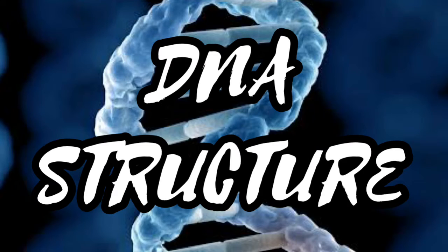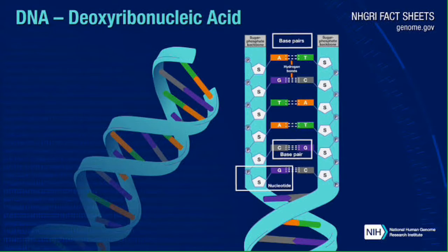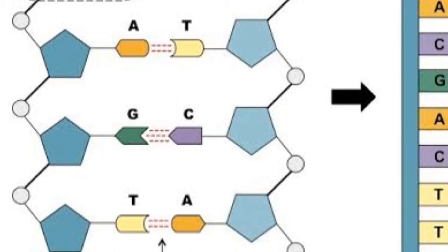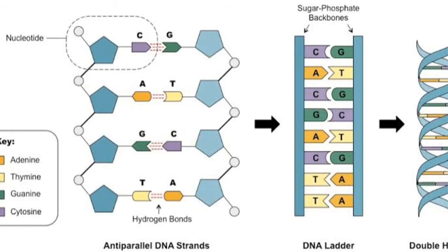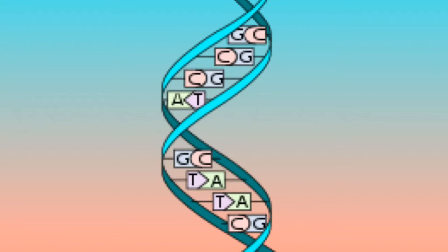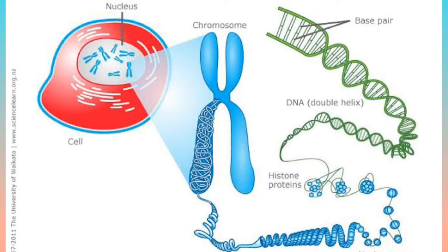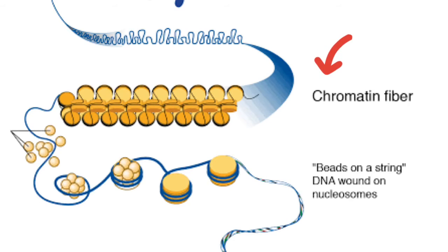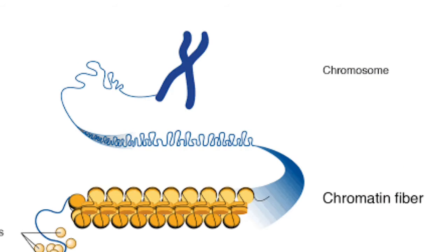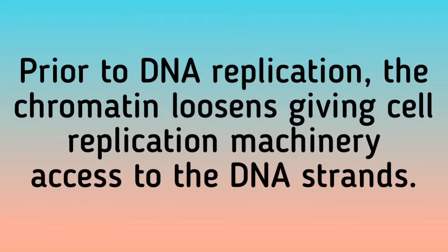DNA structure: DNA, or deoxyribonucleic acid, is a type of molecule known as a nucleic acid. It consists of a 5-carbon deoxyribose sugar, a phosphate, and a nitrogenous base. Double-stranded DNA consists of two spiral nucleic acid chains that are twisted into a double helix shape. This twisting allows DNA to be more compact. In order to fit within the nucleus, DNA is packed into tightly coiled structures called chromatin. Chromatin condenses to form chromosomes during cell division. Prior to DNA replication, the chromatin loosens, giving cell replication machinery access to the DNA strands.